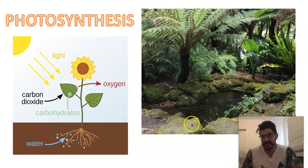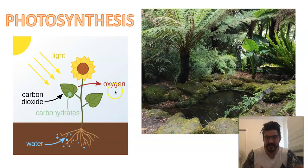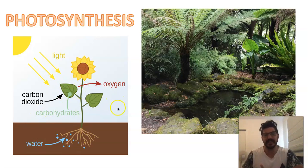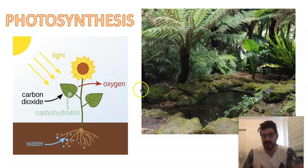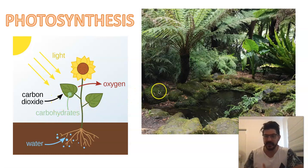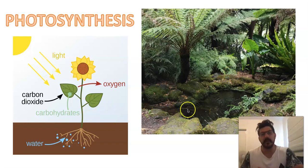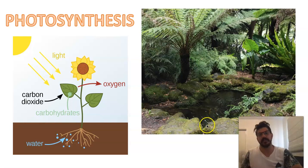We probably understand the basics of photosynthesis as this image shows us — we've got light, carbon dioxide, and water coming into a plant which then produces some form of food, in this case carbohydrates, and oxygen comes out. We know that plants absorb carbon dioxide and release oxygen, and this is done by all of our green plants. There isn't a green plant on the planet that doesn't go through some form of photosynthesis.